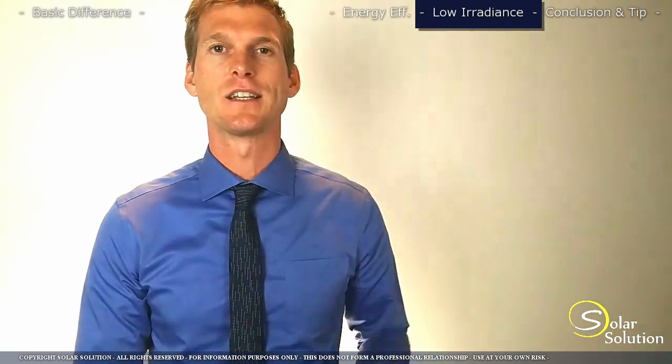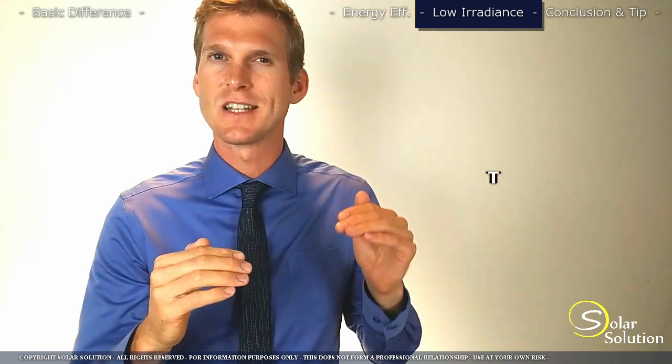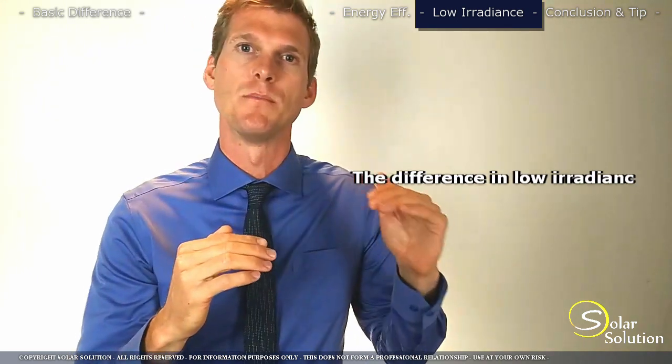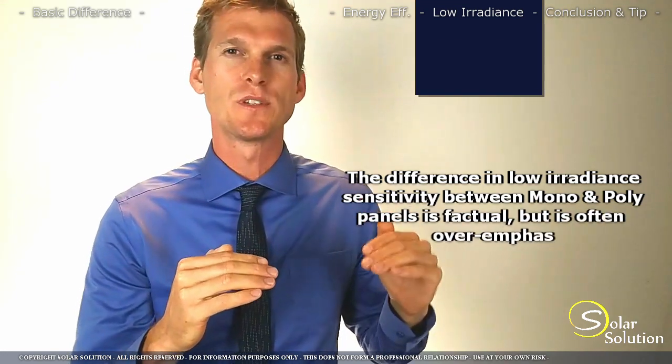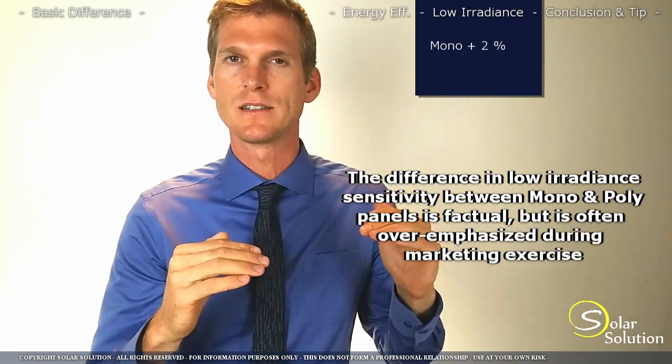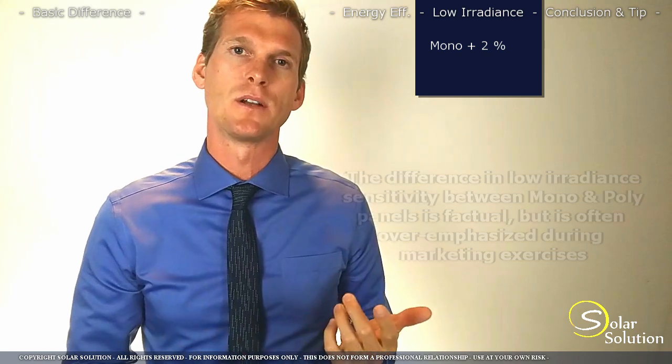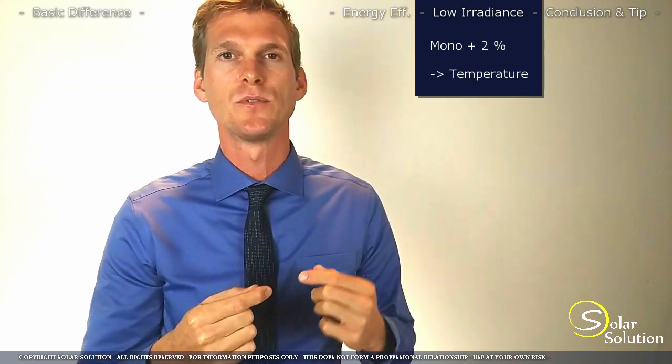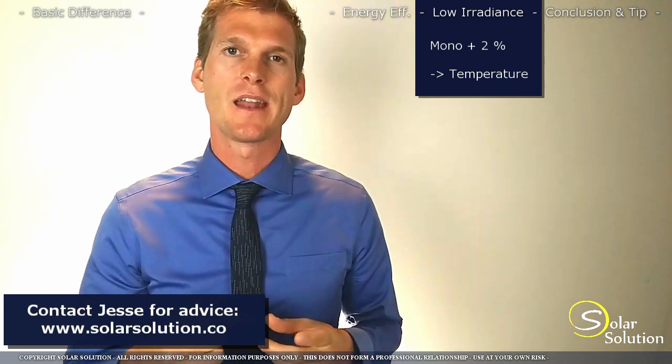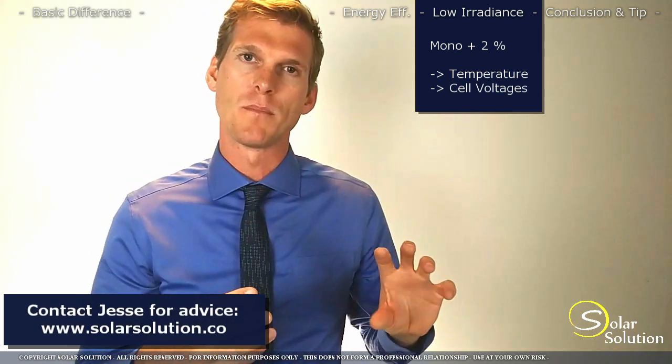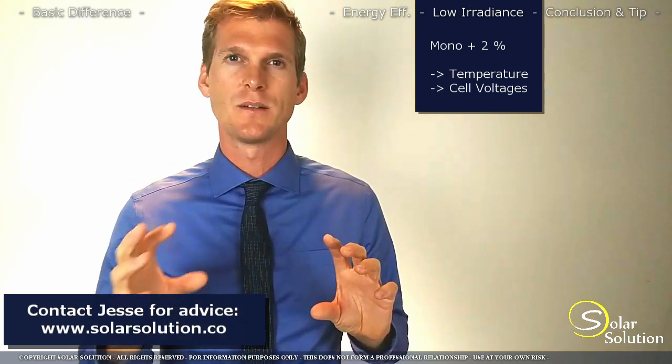When you look at it in detail you can see that there's a slight difference in performance between the monocrystalline and the polycrystalline panels under varying sunlight conditions. The monocrystalline panels can perform up to 2% better compared to the polycrystallines. The reason for this is that the monocrystallines are less susceptible to change in output as the cell temperature changes, and typically the voltage from a mono cell is a little bit higher than a poly cell.